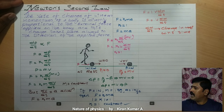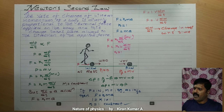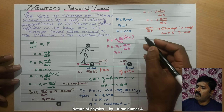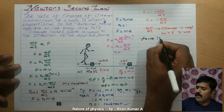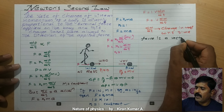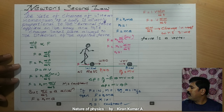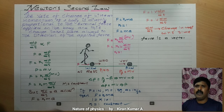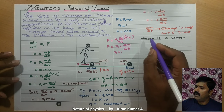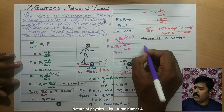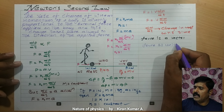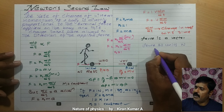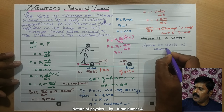Now I will write the units and dimensions step by step. Force is a vector quantity. The SI unit of force is Newton, represented by N.